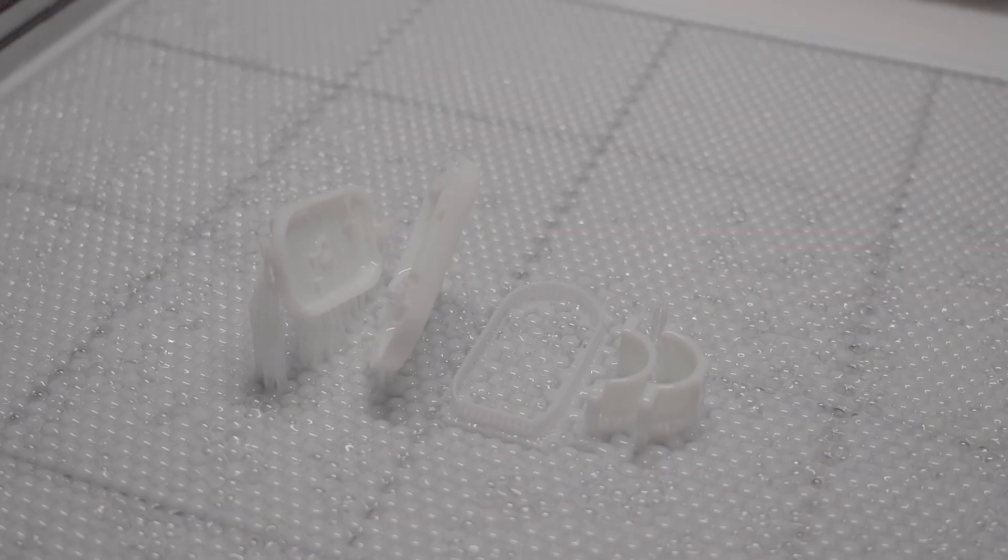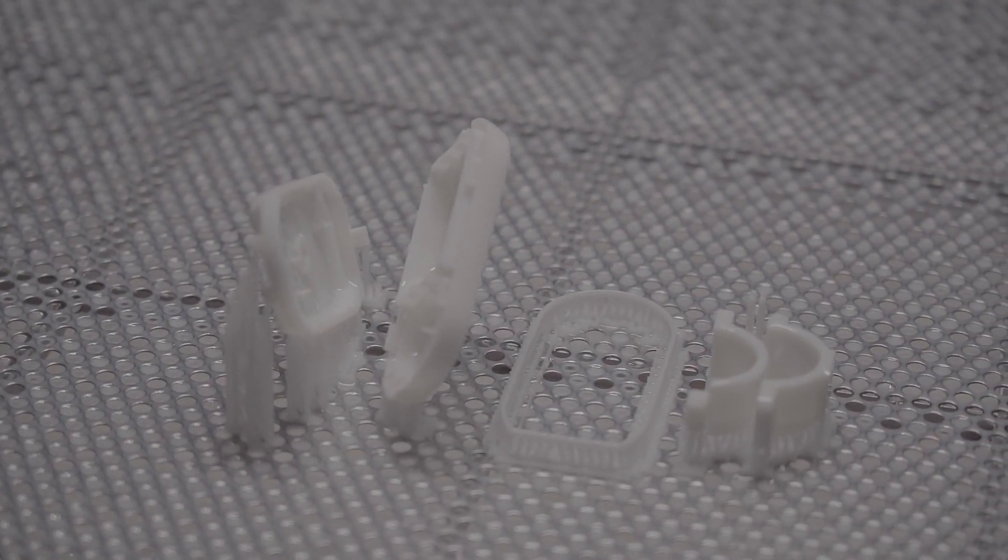The process works by aiming a high-powered beam across the build platform to selectively solidify the resin and build the final part.